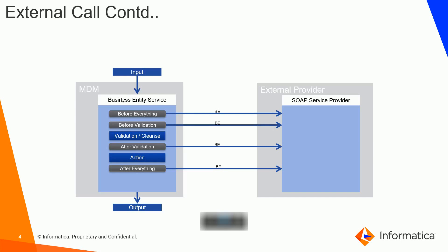In this diagram, on the left side we have the business entity service, and these are the different service phases where you can implement your custom logic. Once custom logic is implemented, at that specific service phase it goes and looks for the SOAP service provider, performs custom validation or data cleansing, and gives a response back to the business entity service.